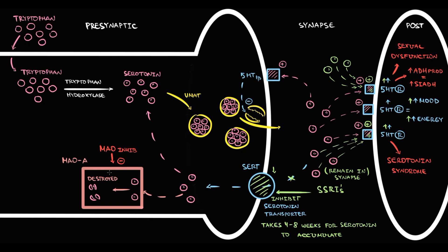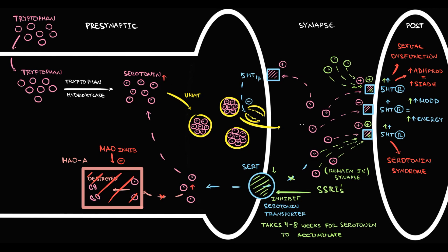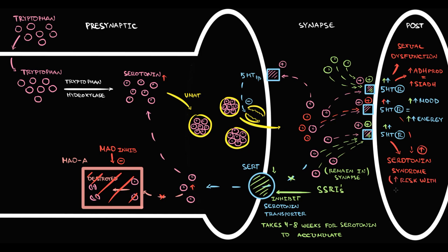If a patient takes only SSRIs, the chance for serotonin syndrome is relatively small. But if we prescribe SSRIs in combination with MAO inhibitors, it becomes dangerous, because MAO inhibitors block any possibility to destroy excessive serotonin molecules inside the presynaptic neuron. With decreasing serotonin degradation, the total serotonin pool increases, the amount of serotonin released into the synapse increases, and the stimulation of serotonin receptors increases — greatly raising the chances of serotonin syndrome. So, prescription of SSRIs with MAO inhibitors can be quite dangerous.